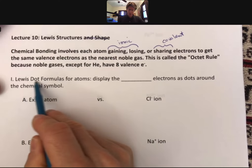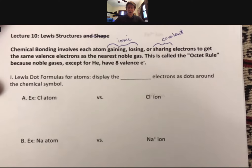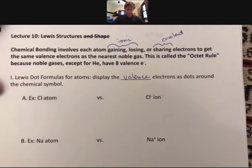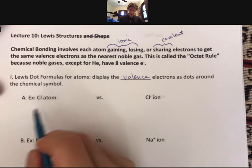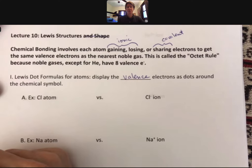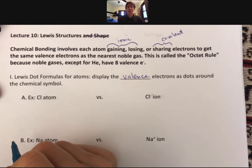That's why we start with Lewis dot formulas for atoms. They display the valence electrons as dots around the chemical symbol. We've talked about valence electrons for atoms. We're also going to do it for ions, since we're going to be making ions for ionic bonding. Before we talk about valence electrons again, let's talk about electron configurations.